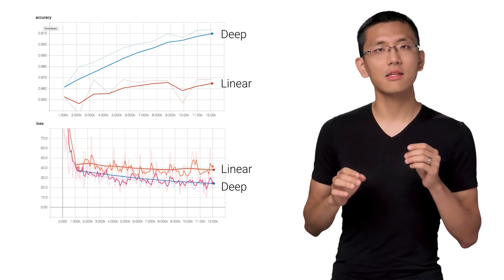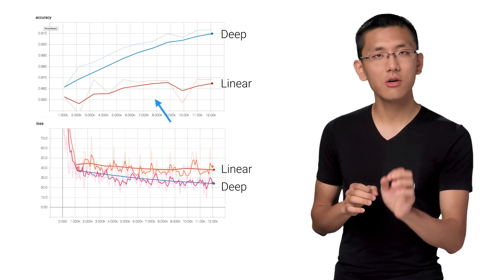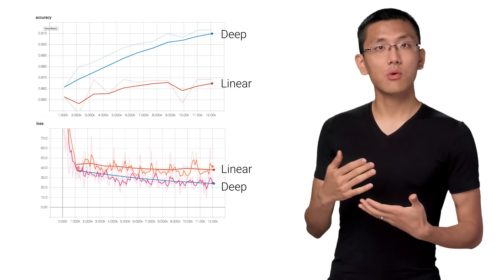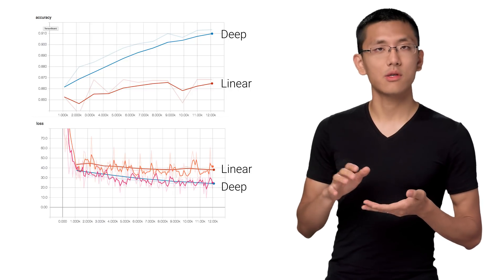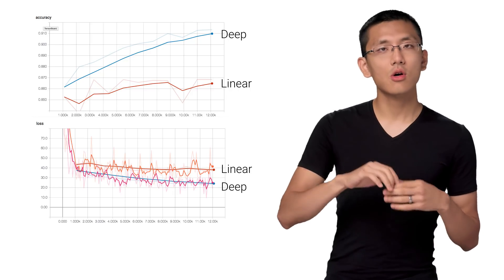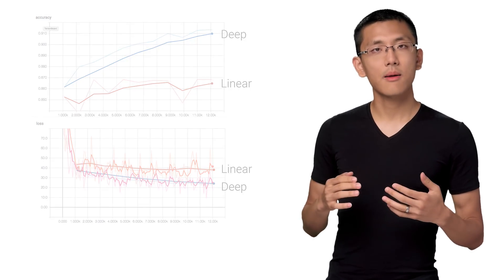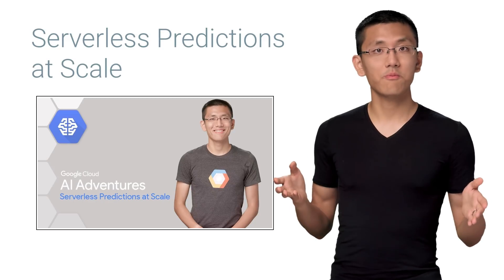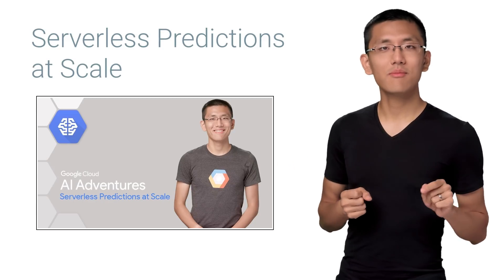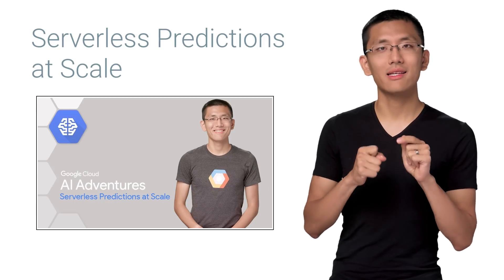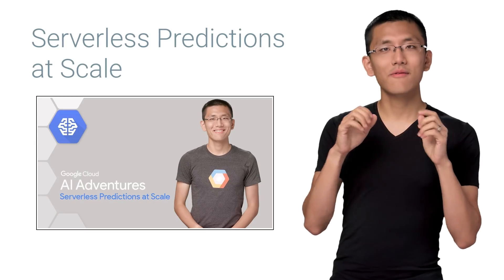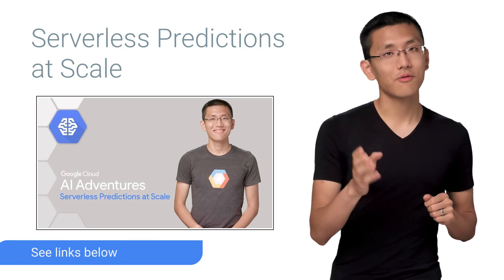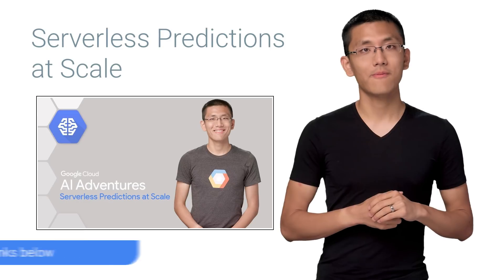Notice also that the linear model plateaus earlier than the deep network. Because deep networks are often more complex than linear ones, they can take longer to train. And at this stage, say we're happy with our model — we'd be able to export it and produce a scalable Fashion MNIST classifier API. You can see episode 4 for more details on how to do that.